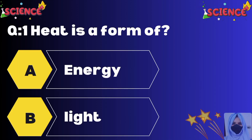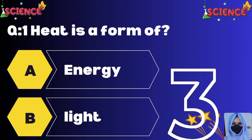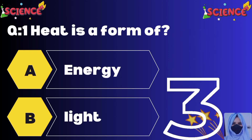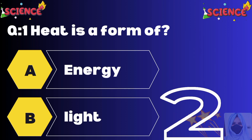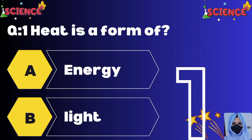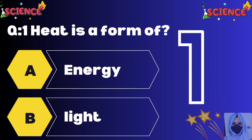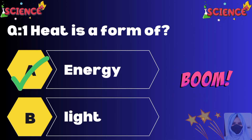Heat is a form of: option A energy, option B light. The correct option is A, energy.